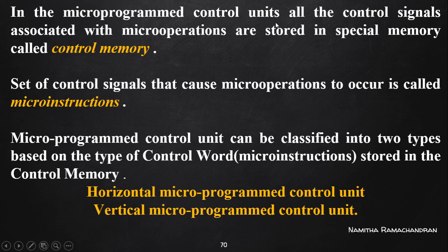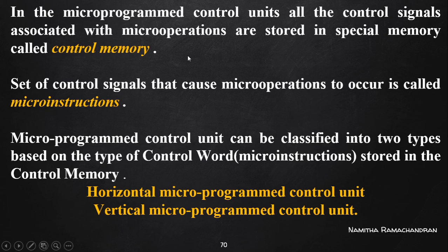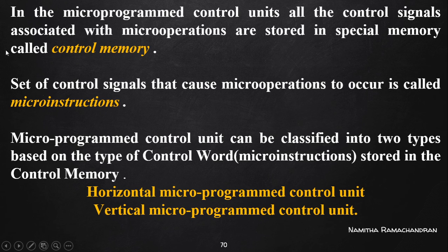In a micro program based control unit, all the control signals associated with micro operations are stored in a special memory called control memory — a ROM type control memory. We store micro instructions in this control memory. A micro instruction is a set of control signals that cause certain micro operations to occur.